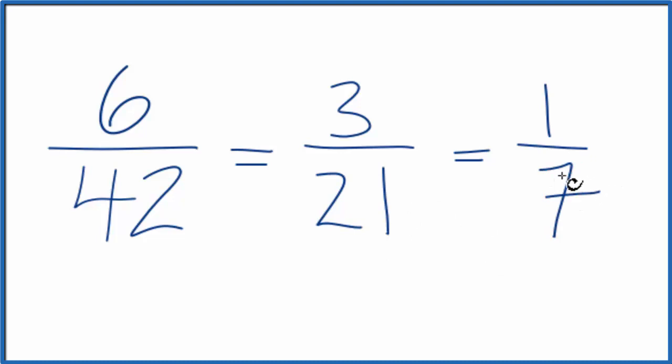Same thing we got before, just kind of an additional step in here. In case you didn't know that 42 was divisible by 6, 7 times.